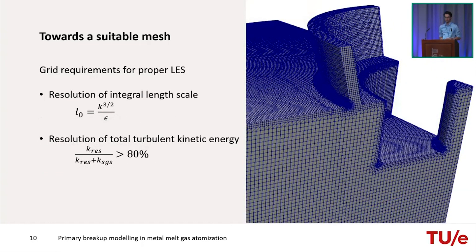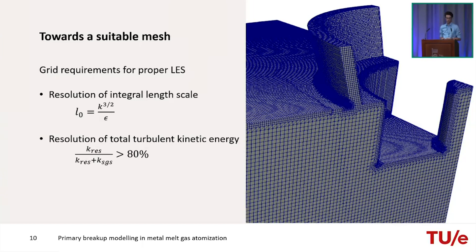For proper LES, we need to resolve the integral length scale of turbulence — locally representing the average size of turbulent kinetic eddies, calculated from TKE and its dissipation rate. The criterion is that more than 80% of total turbulent kinetic energy should be resolved by the mesh. Running simulations with gas flow only (no liquid metal), we see high velocities near the pressurized gas inlet concentrated toward the center, and correspondingly different integral length scales across the domain.